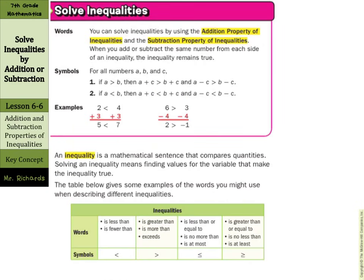Our key concept is the addition and subtraction properties of inequalities. You can solve inequalities by using these properties. When you add or subtract the same number from each side of an inequality, the inequality remains true. For example, 2 is less than 4; add 3 to both sides and 5 is less than 7. Similarly, 6 is greater than 3; subtract 4 from both sides and 2 is still greater than negative 1. An inequality is a mathematical sentence that compares quantities, and solving one means finding values for the variable that make it true.